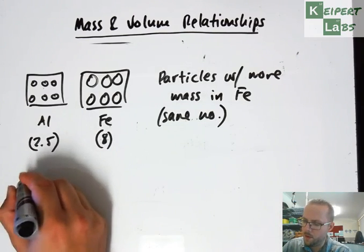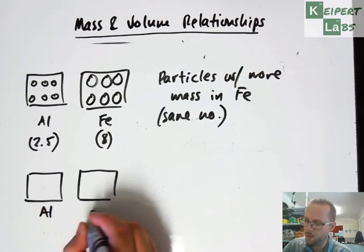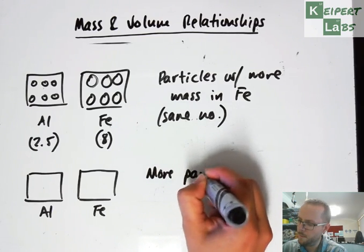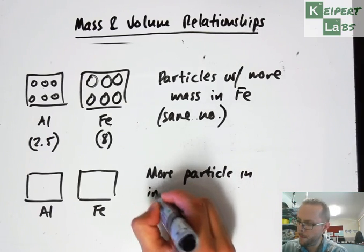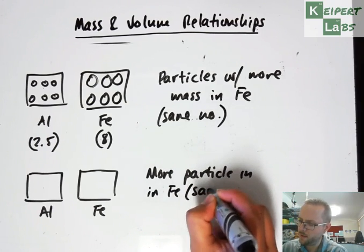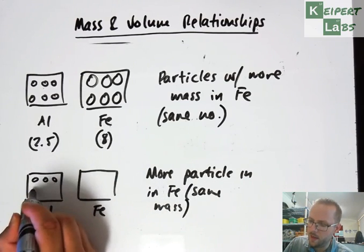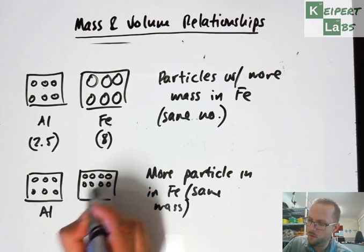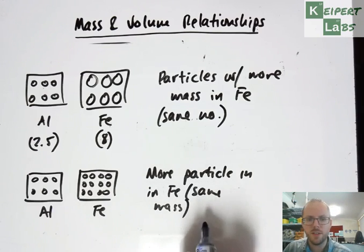Another possibility that we have, again assuming that these boxes are the same size, I did a bit better this time around, is that we have more particles in Fe but they're the same mass. So if I've got six particles like this in aluminum, maybe I've got 12 particles or more in my iron sample. So I've got the same particles of the same mass and size, but there's more particles, and maybe they're packed a little bit more closely together in this sample.